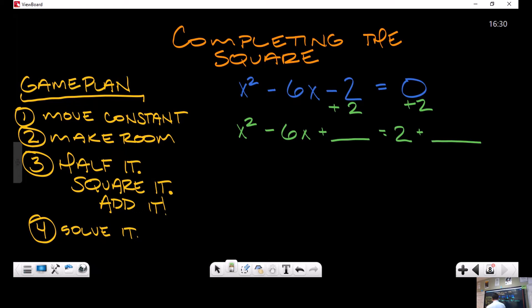B is -6. Half it: b divided by 2 equals -6 divided by 2, or -3. Now we're going to square that: (-3)² is going to give us positive 9. Now we're going to add it, so I'm going to add 9 to both sides.